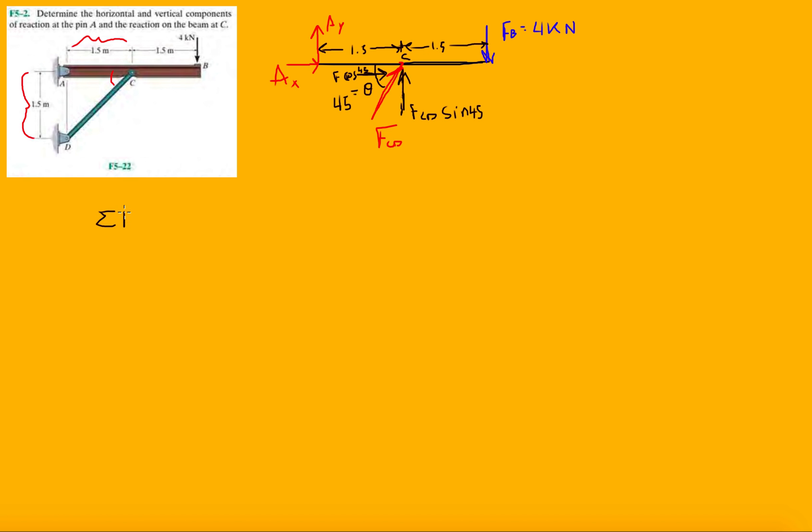Now let's do equilibrium equations. F of X equals 0. All right, and everything in the X is going to be AX. What else do we have? We have plus FCD, and then cos 45 is the square root of 2 over 2, that way you don't have to carry that thing around all over the place. And that's it. Next thing will be Fy is 0. And then we have AY minus FCD, sine 45, and again this is going to be square root of 2 over 2, and then minus 4 kilonewtons equals 0.